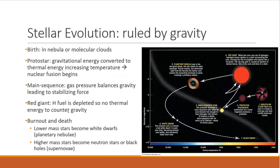So stars are ruled by gravity. They are born in nebula or molecular clouds, and then gravity will collapse the cloud down and form a protostar. So the gravitational energy gets converted to thermal energy. This increases the temperature, and then we have that nuclear fusion beginning. In a main sequence star, we have gas pressure balances the gravity, so that stabilizes out the star. So basically, you have the stars trying to expand due to gas, but then the gravity is trying to pull it in, and it stabilizes it.